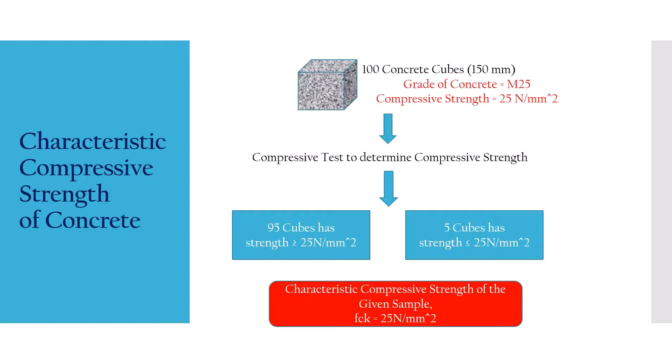In a case where out of 100, 94 cubes had a strength greater than 25 N per mm² and the remaining 6 cubes showed a lesser value — that is 6% of the test results show a lesser value — then we won't take FCK as 25 N per mm². So we cannot finalize FCK as 25 N per mm².